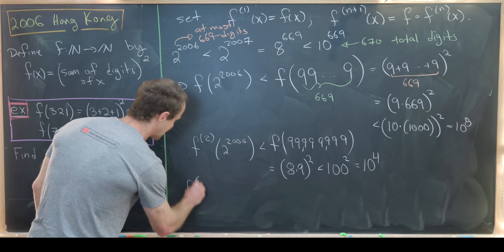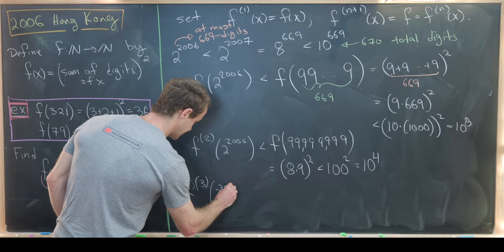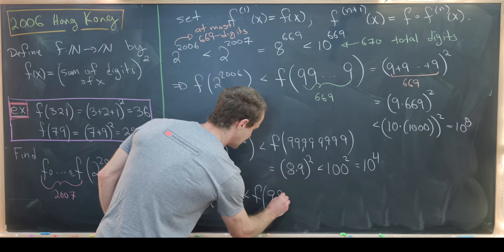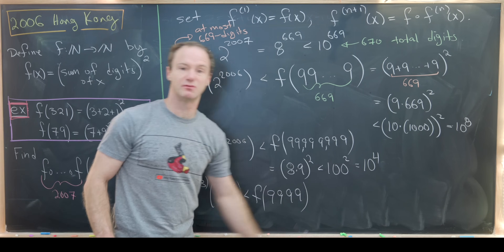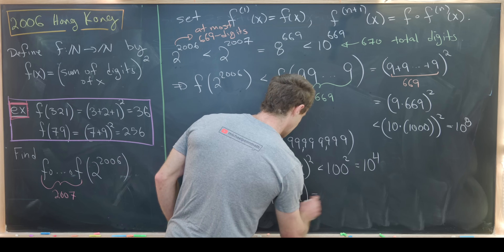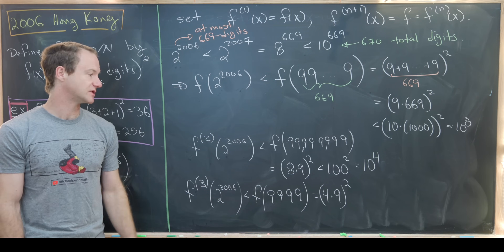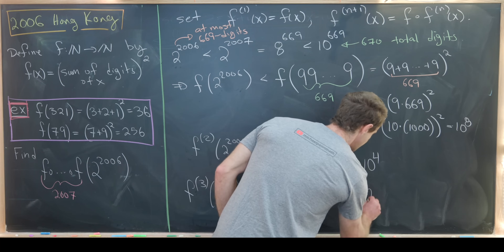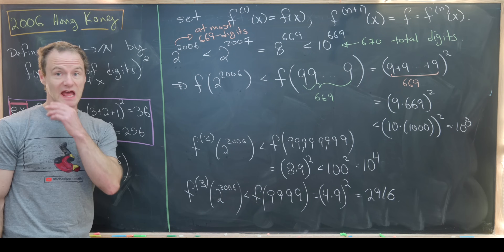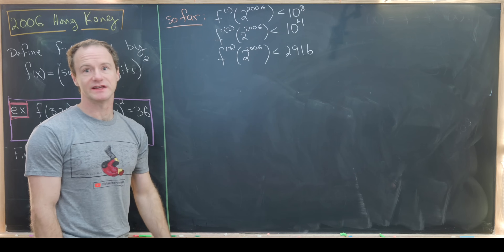We can play this game again and again. f upper 3 of 2 to the 2006 will be less than f evaluated at 9999 — four nines — since that's the largest f-value among numbers with fewer than 5 digits. That equals (4 × 9) squared = 36 squared = 2916.